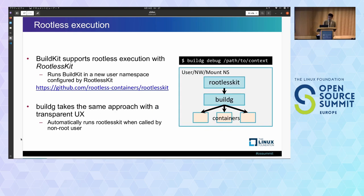BuildG supports rootless execution, so non-root users can run BuildG. In terms of BuildKit, it supports rootless using rootless-kit. We can run BuildKit in a new user namespace created and configured by rootless-kit, and inside that namespace, rootless BuildKit can run containers for the build. BuildG takes the same approach with a transparent UX. When BuildG is run by a non-root user, it automatically runs rootless-kit and runs BuildG itself in a new user namespace created by rootless-kit.